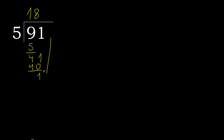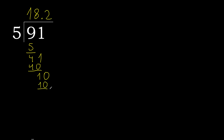Next, there is no more number. Therefore, add a decimal point and complete with 0. We now have 10. 5 multiplied by 2 is 10. 10 minus 10 is 0. Remainder is 0, so we finish here.